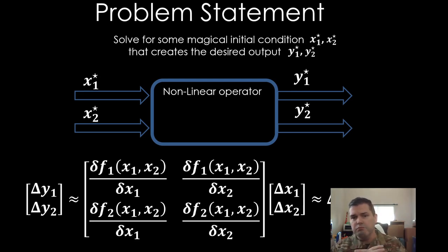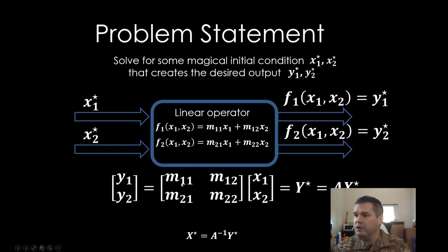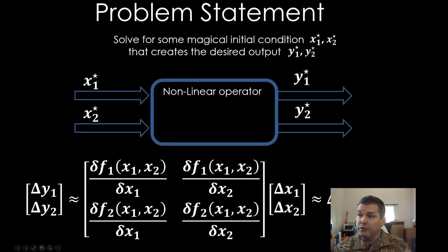But what about when those operators are nonlinear? Well, if they're nonlinear, then we can treat them as linear, as long as we know those functions. If we know those functions, then we can take the partial derivative this time, because they're functions of multiple variables. We can construct this matrix: the rate of change of function one with respect to input one, the rate of change of function one with respect to input two, the rate of change of function two with respect to input one, and the rate of change of function two with respect to input two. It's just the slopes. We can construct the same matrix for nonlinear functions given that we know the function. We can evaluate this partial derivative.